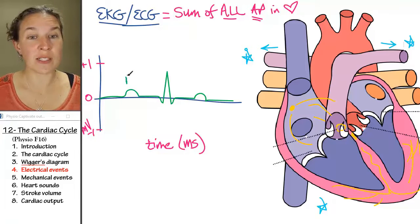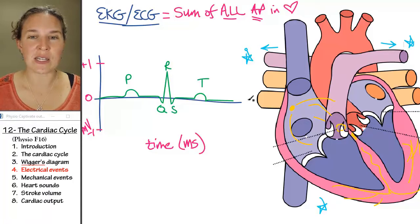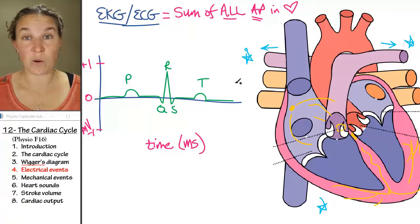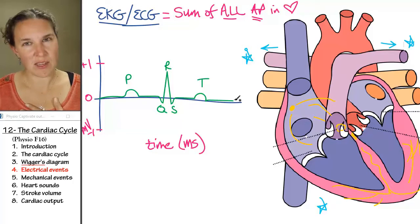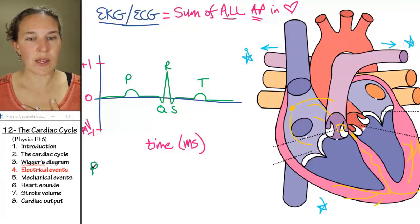The first wave is the P wave. The second, we've got a QRS complex, and then we have the T wave. Nice, it's in alphabetical order. So let me tell you the things that are happening during each of these waves.